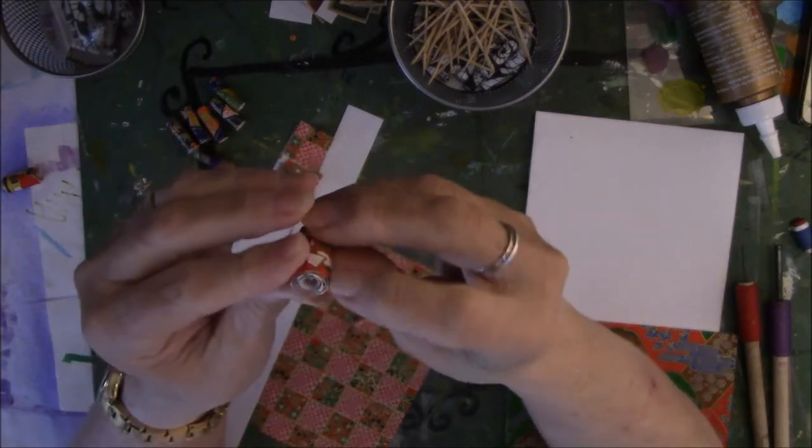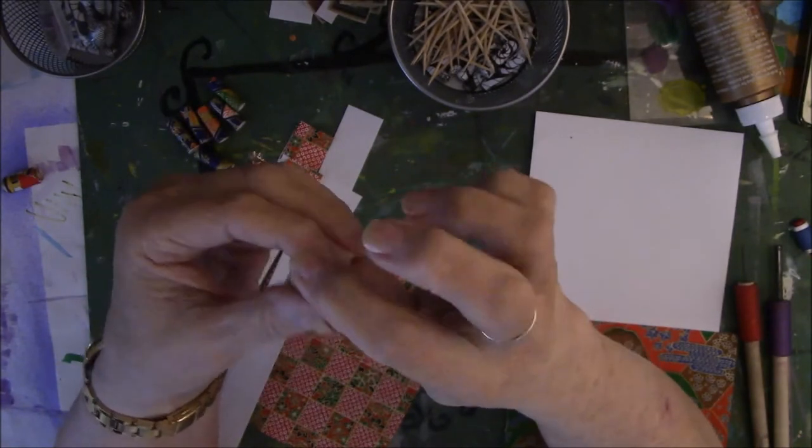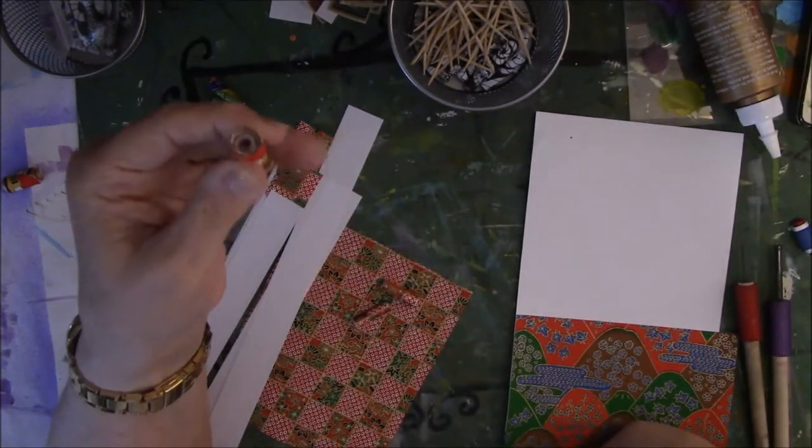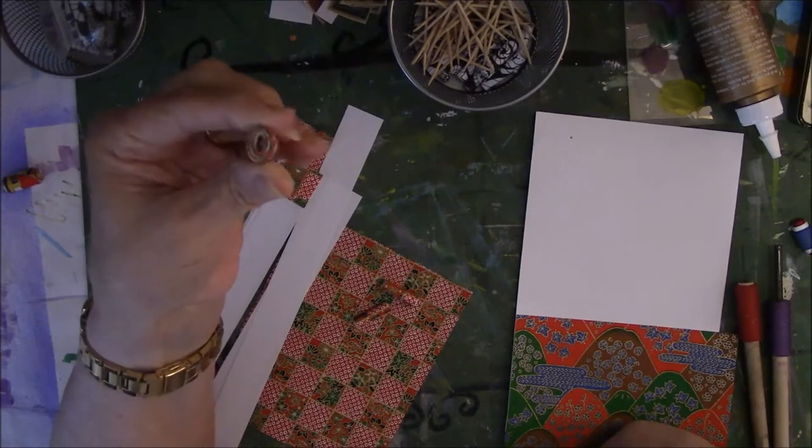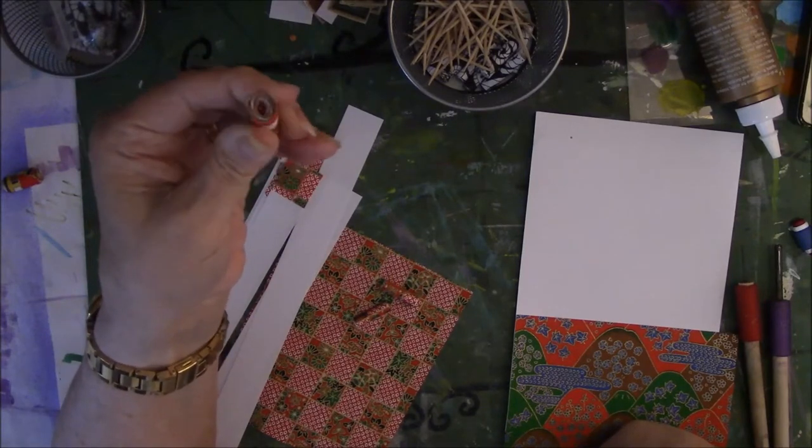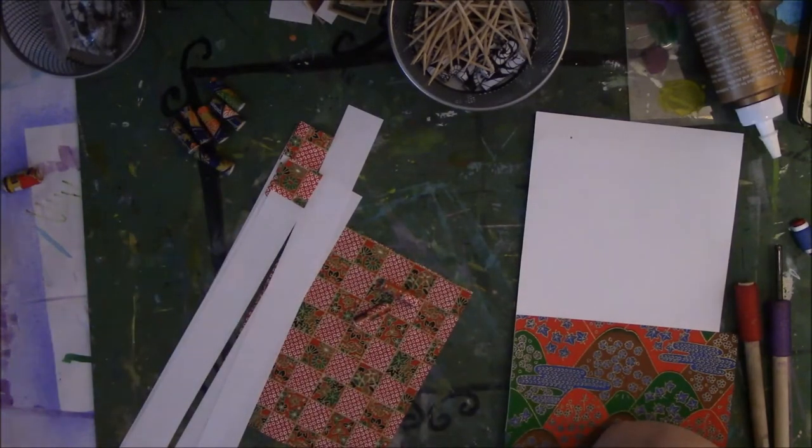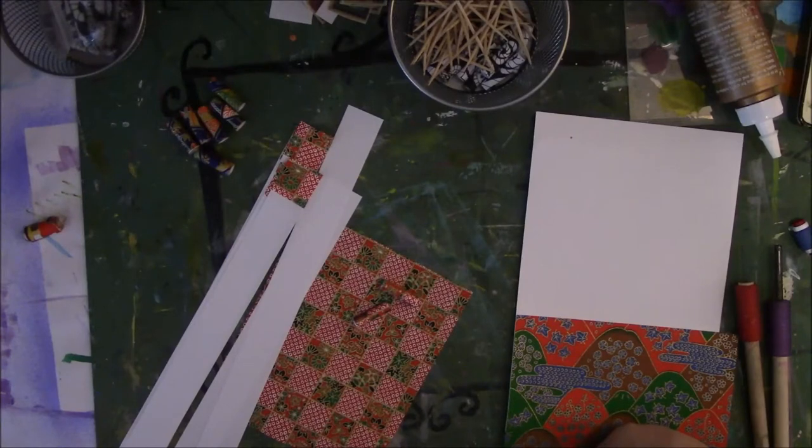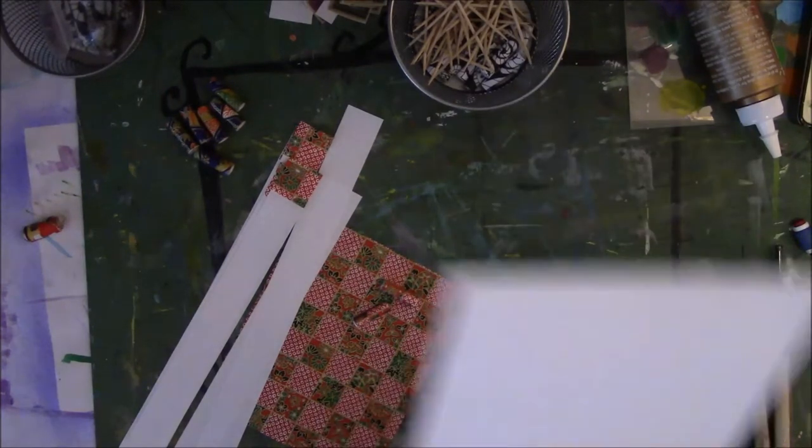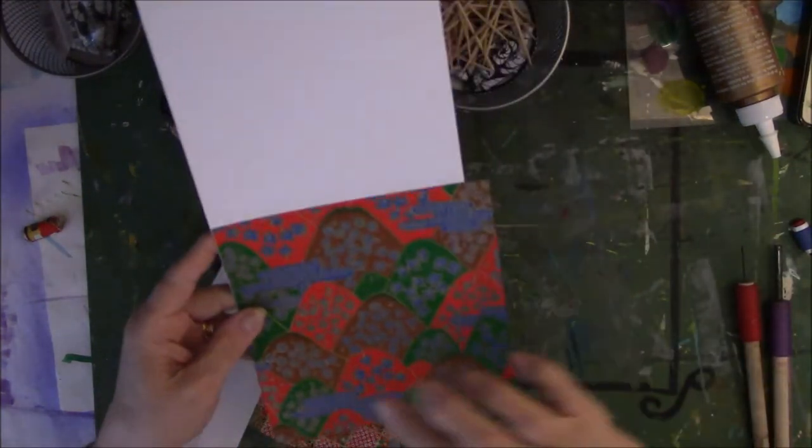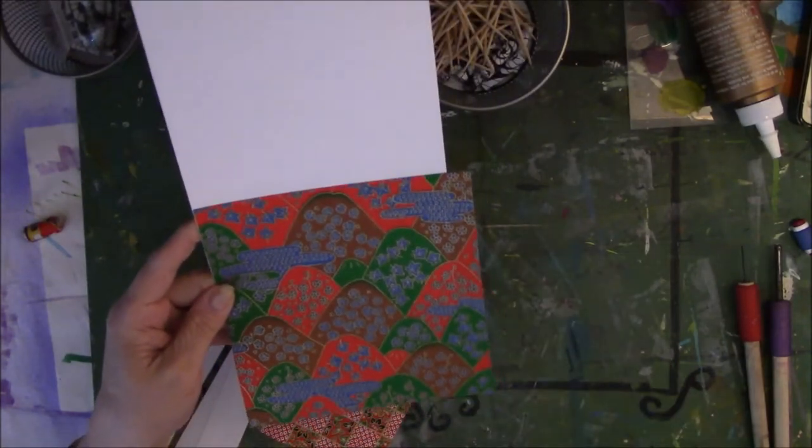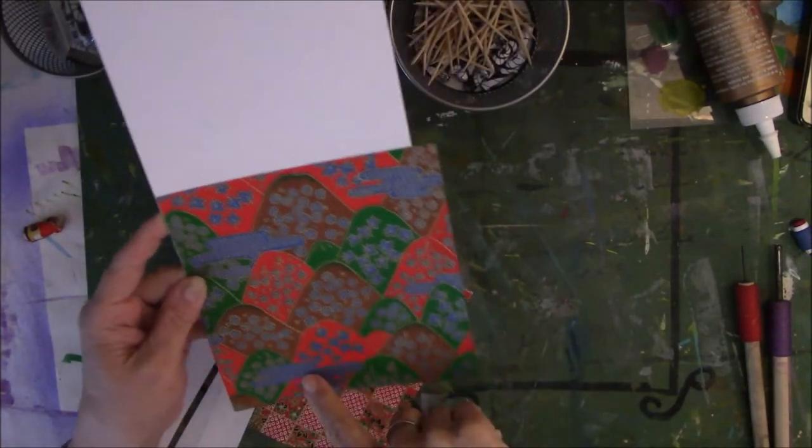So then I thought, okay, well, let me try to reinforce it a little bit. And I tried the same thing and it doesn't matter. It's still not the sturdiest of beads. So then I got to thinking about it. One way to make them sturdy would be to do this. So I took, this is a 6x6 square of origami paper.